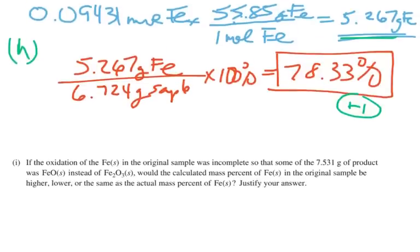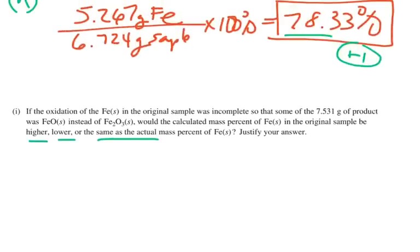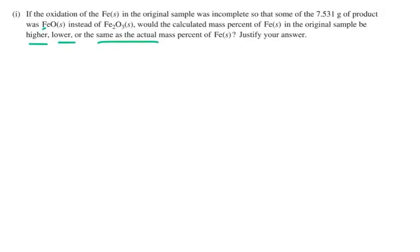Now, my last part on here was confusing for a lot of people. That says, if the oxidation of the iron in the original sample was incomplete so that some of the 7.531 grams of the product was FeO instead of Fe2O3, would the calculated mass percent of iron in the original sample be higher, lower, or the same as the actual mass percent of the iron? Justify your answer. So we're going to say that this number here, the 78%, that is the actual mass if everything was turned into Fe2O3. But if in there there was some FeO instead of Fe2O3, how would that affect everything?